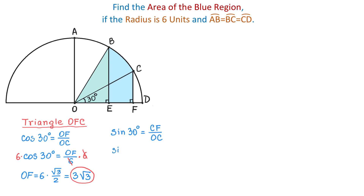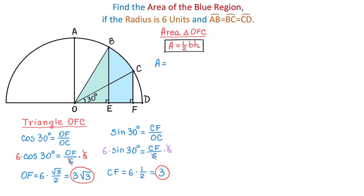Sine of 30 degrees equals CF divided by OC. Replacing OC with 6, we have sine of 30 degrees equals CF over 6. Multiplying both sides by 6, CF equals 6 multiplied by sine of 30 degrees, which is 1/2, so CF equals 3. That is the height of the triangle. The area of triangle OFC is 1/2 times base times height, which is 1/2 times 3 square root of 3 times 3, giving 9 over 2 square root of 3.